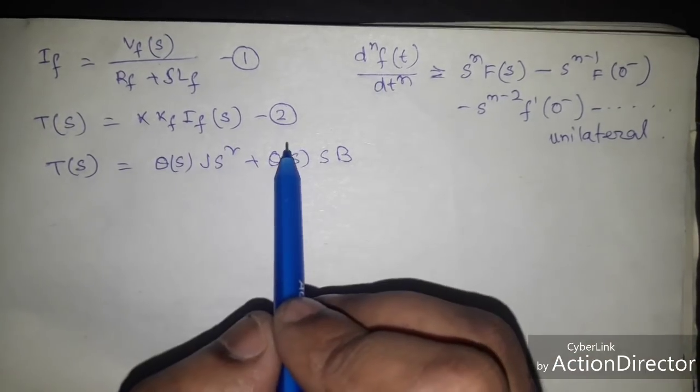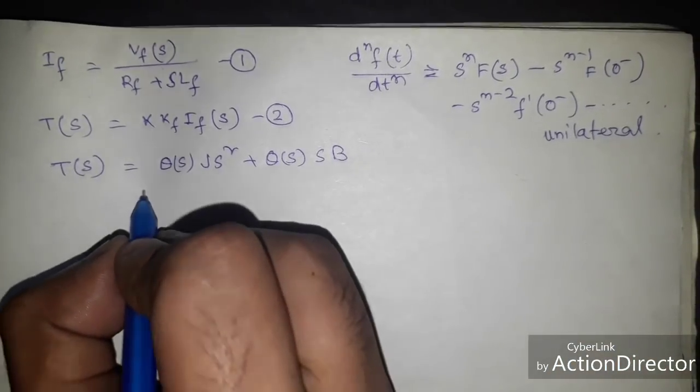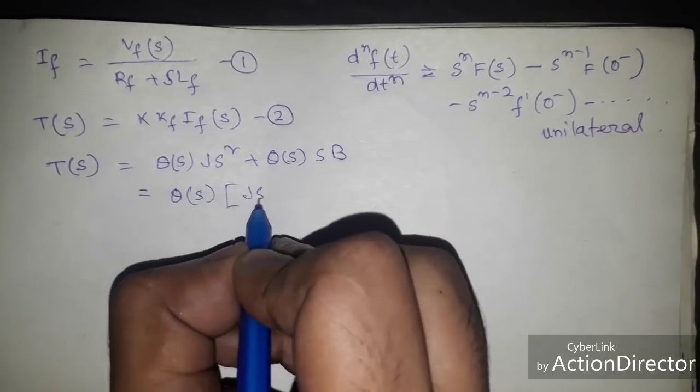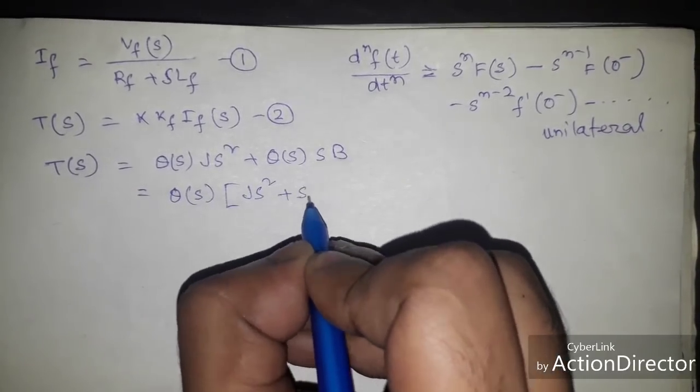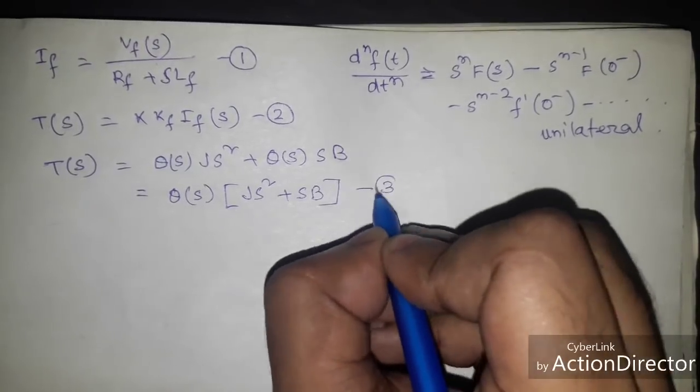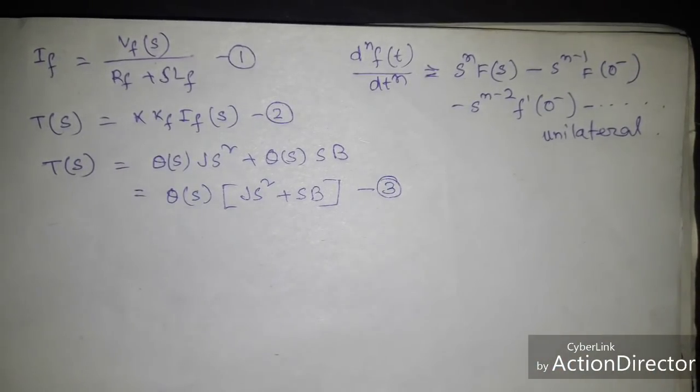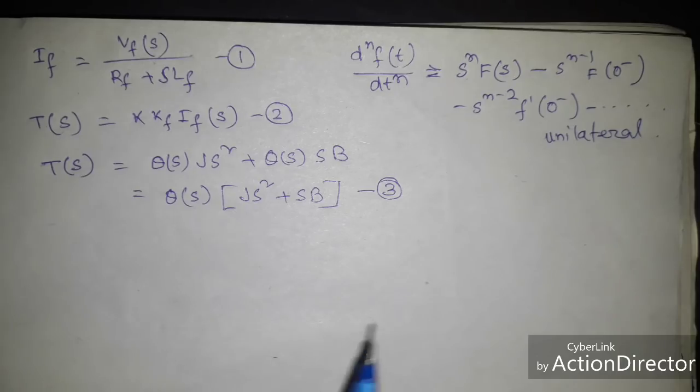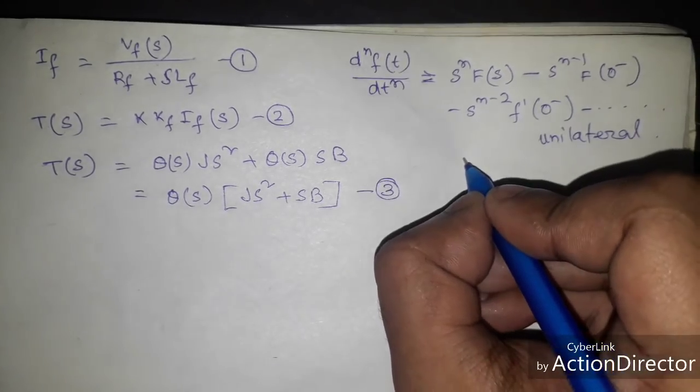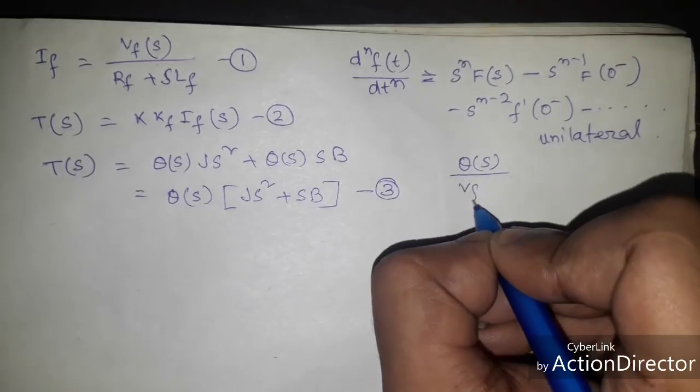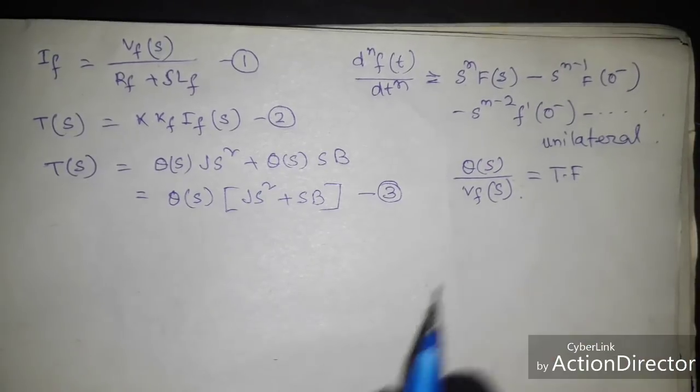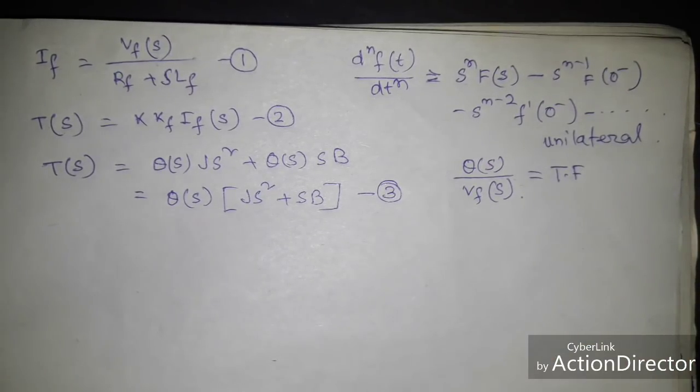So I get these three equations. If we take common θ(s), that will be J s² plus s B. We rearrange that equation. Finally we have to find θ(s) by Vf(s), so this is the transfer function of field control DC motor.